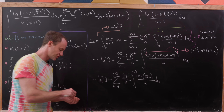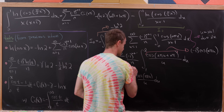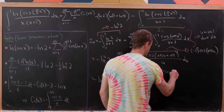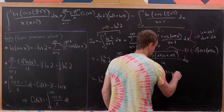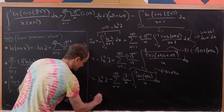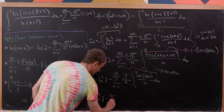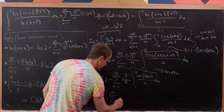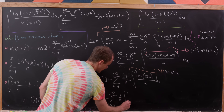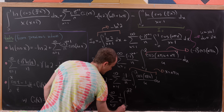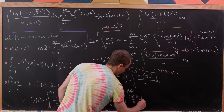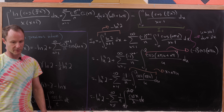We substitute x = nπu in each inner integral, shifting the limits to [nπ, 2nπ]. This gives I₂ = −ln²(2) minus the sum from n=1 to infinity of 1/n times the integral from nπ to 2nπ of cos(x)/x dx.